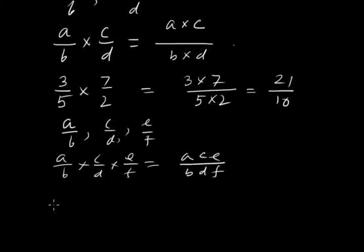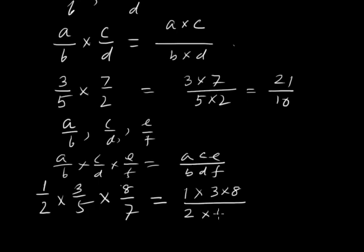To multiply 1/2, 3/5, and 8/7: 1 times 3 times 8 over 2 times 5 times 7. You can simplify this as 2 and 8, you can write 4. So now 1 times 3 times 4 becomes 12, and 5 times 7 is 35.